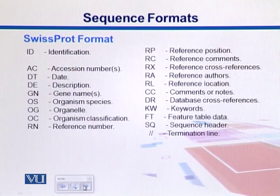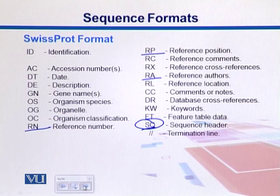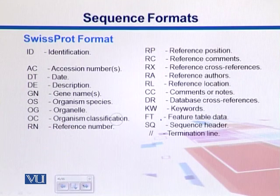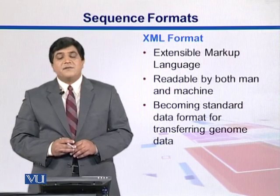Swiss-Prot is similar to EMBL except it includes more description fields. For example, we have RP for reference position, RN for reference number, RP again for reference position, and authors who submitted the record. The sequences also start with SQ, and the termination line is represented as a double slash.